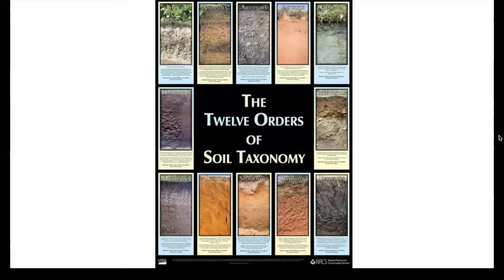Ultisols are soils that are formed in humid areas and they are also intensely weathered. Ultisols make up about 8% of the glacier-free land surface in the world.